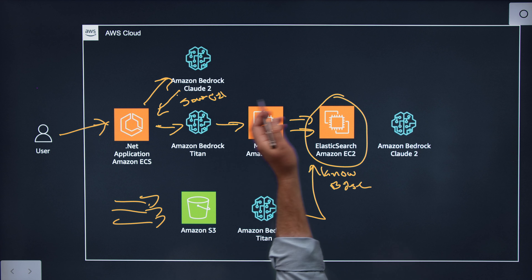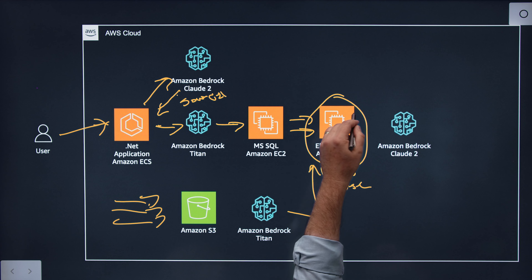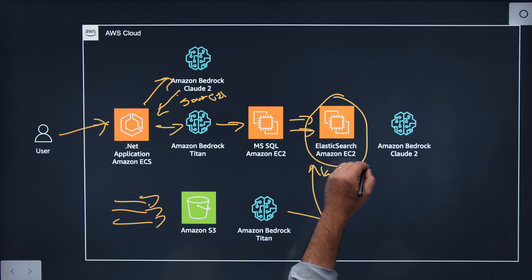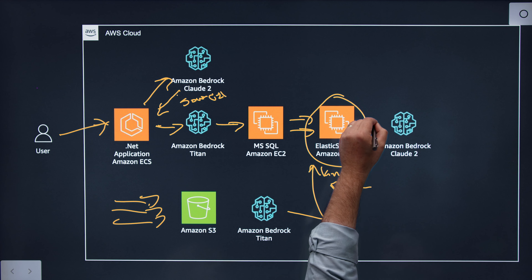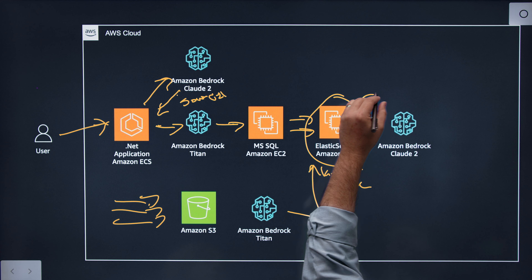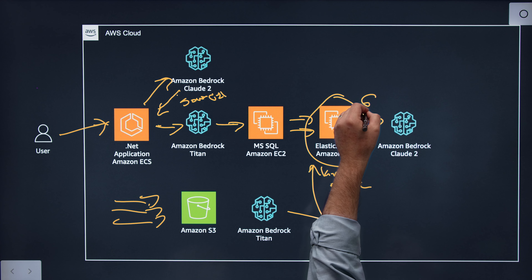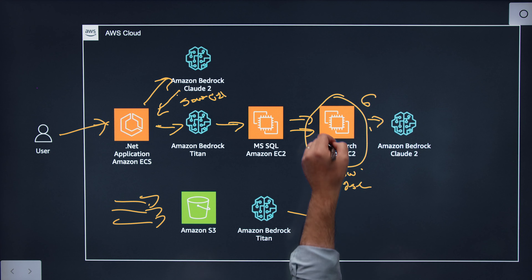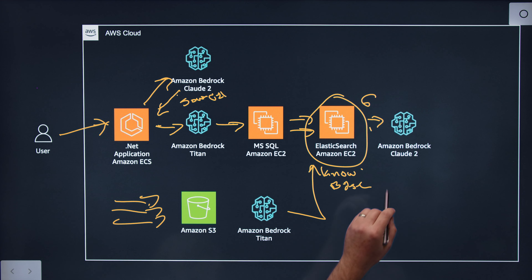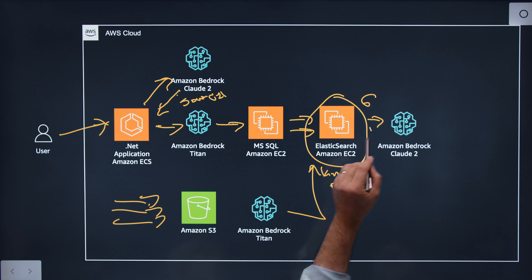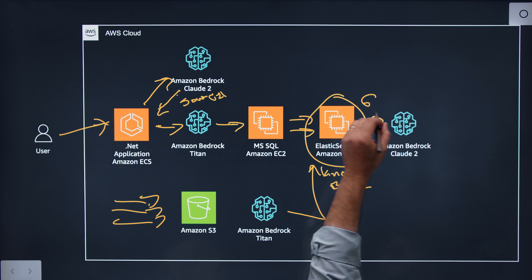What specifically are you searching in ElasticSearch? We're searching the job descriptions and we're taking the user's query — something like cardiology jobs — we have the geolocation, we search the content base, and we're pulling out six relevant job postings that are relevant to that search. So you have these six results — what do you do with that information?